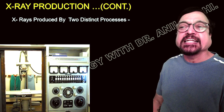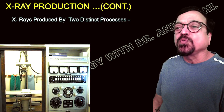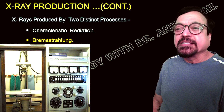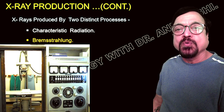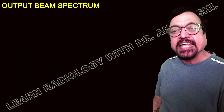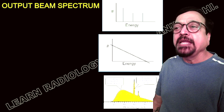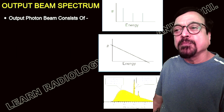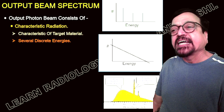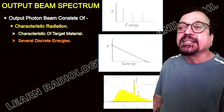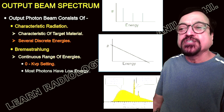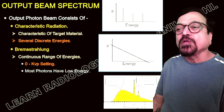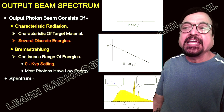X-rays are produced by two distinct processes. The first is characteristic radiation. The second is Bremsstrahlung — a German word meaning 'to decelerate' or 'to stop suddenly.' The output beam spectrum shows which part is characteristic radiation and which is useful. Bremsstrahlung is a continuous range of energies ranging from zero to a few keV, so most of those photons have low energy and make no contribution to the diagnostic imaging process.